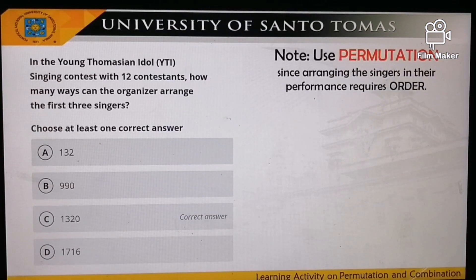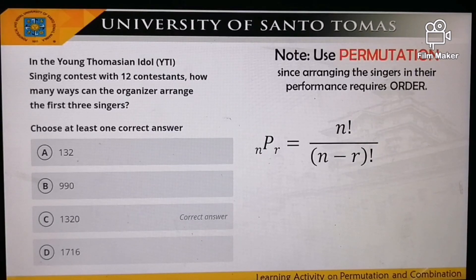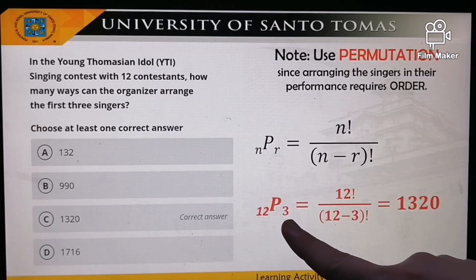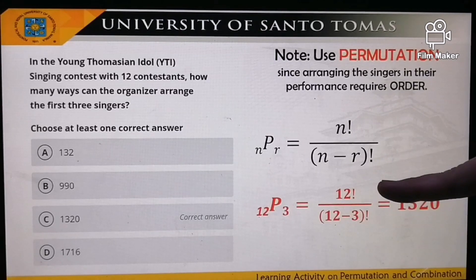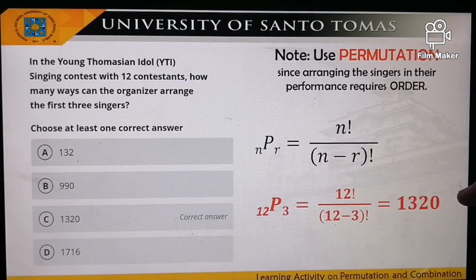In the Young to Match an Idol (YTI) singing contest with 12 contestants, how many ways can the organizer arrange the first three singers? Arranging the singers in their performance order requires order, so we use permutation. That gives us P(12,3) = 12! / (12−3)! = 1320 ways. The answer is letter C.